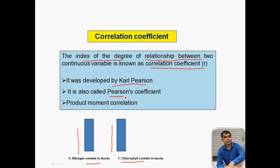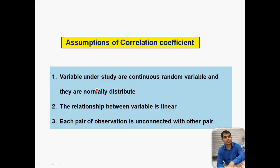The correlation coefficient was developed by Karl Pearson, so sometimes it is called the Pearson coefficient. It is also called the product moment correlation — meaning at each unit of increment of the X variable, how much increment occurs in the Y variable. The assumptions are: the variables under study are continuous random variables, they are normally distributed, and the relationship between the variables is linear — correlation coefficient will always have linear correlation, either positive or negative.